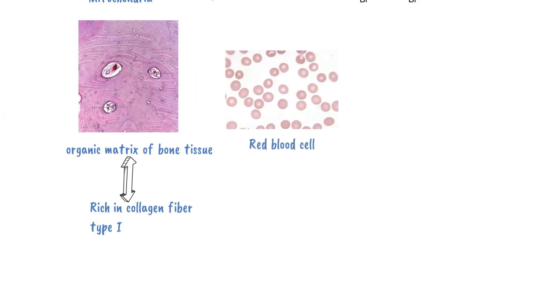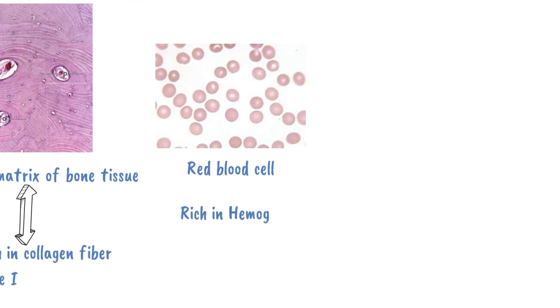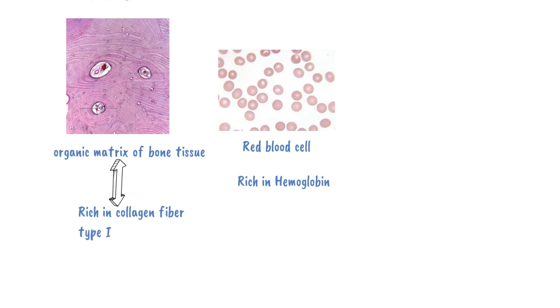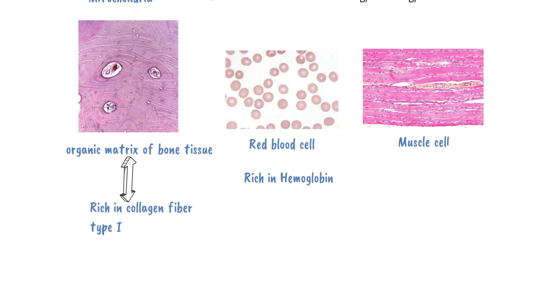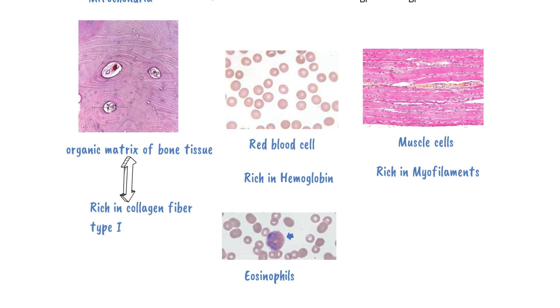Further acidophilic examples include the cytoplasm of red blood cells due to richness in hemoglobin, muscle cells due to richness in myofilaments, and eosinophilic granules in eosinophils — that's why they are called eosinophils, because they love or bind with eosin.